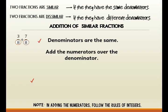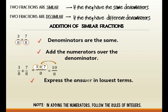Next, add the numerators over the denominator. So, from 3 over 8 plus 7 over 8, it can be written as 3 plus 7 all over 8, and 3 plus 7 is equal to 10 over 8. Then, express the answer in lowest terms. 10 and 8 can be divided by 2, so the reduced form is 5 over 4.